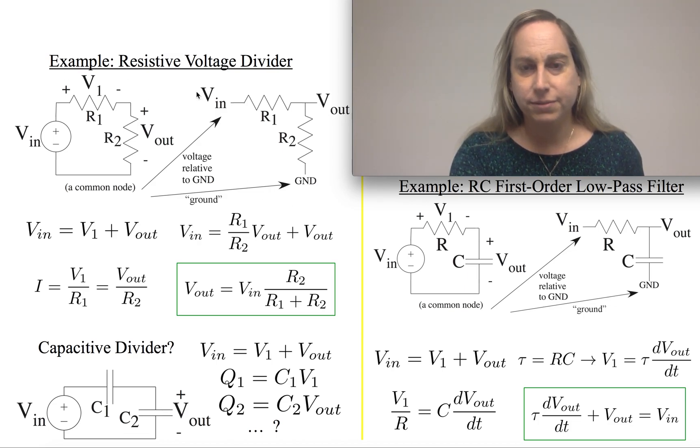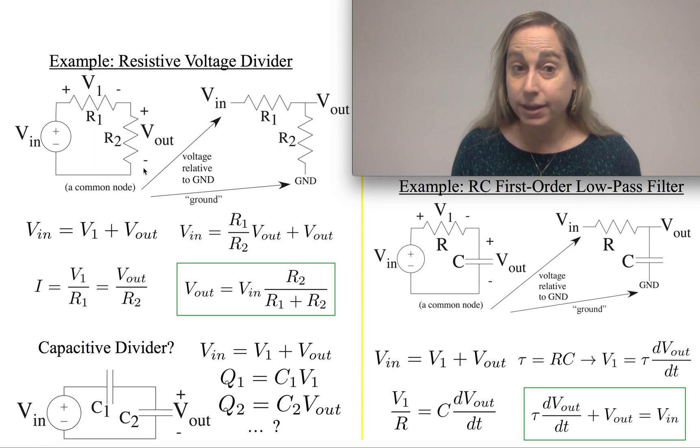Starting first with a resistive voltage divider, the circuit would look something like this. We would draw it with a voltage source and two resistors here and here. The question would be, how would I solve this circuit? How do I solve it? Well, you go through a couple things.